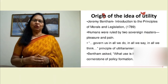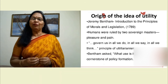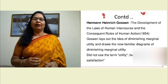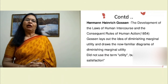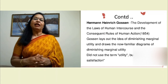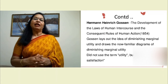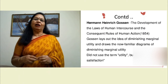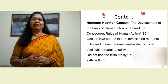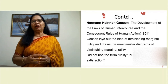Bentham's important question was: what is the use of something we do if it does not give pleasure to people? This has become the cornerstone of government policy. We also relate this to Henry Gossen, who developed the idea into something called diminishing marginal utility, introducing the words 'diminishing' and 'marginal,' and developing the graph we popularly use today — dating back to 1854, over 150 years ago. He does not use the word 'utility' but instead uses the phrase 'magnitude of satisfaction.'